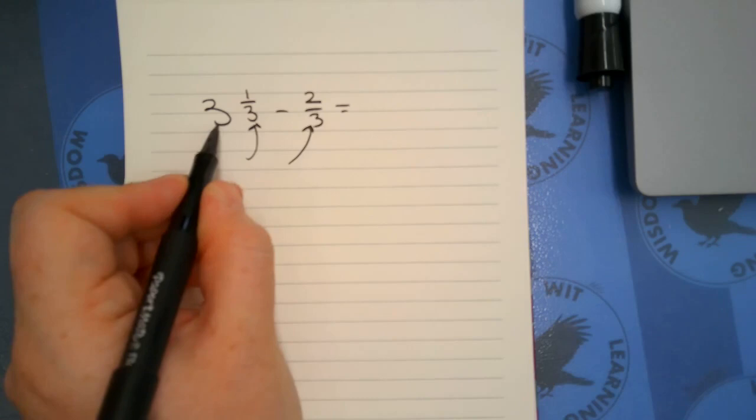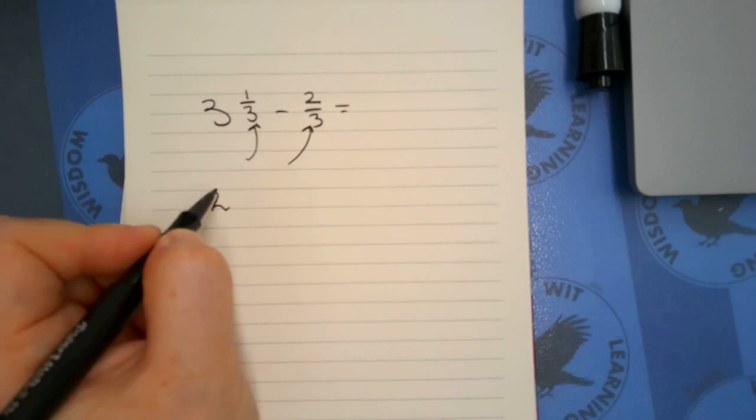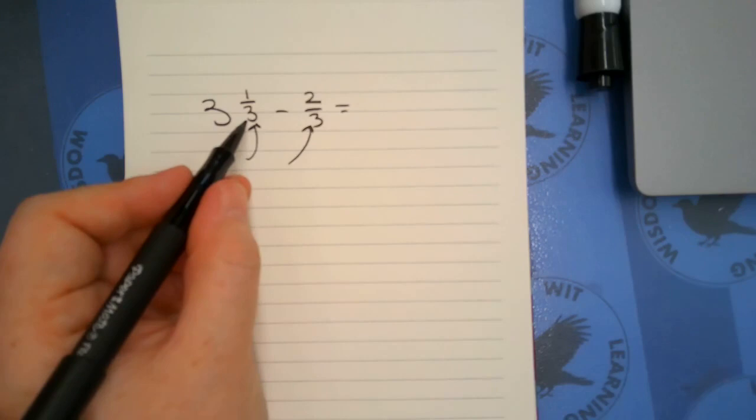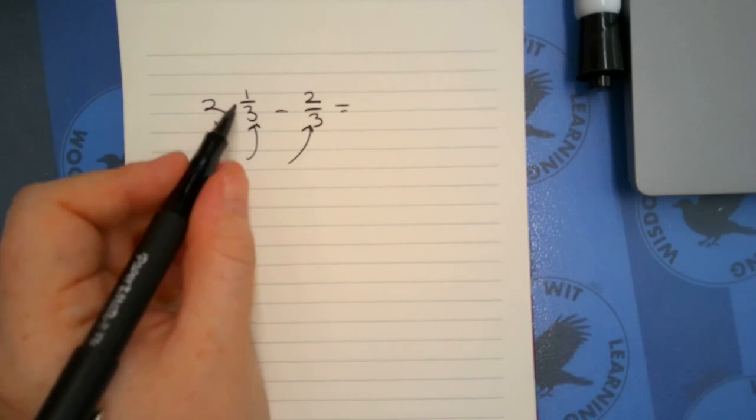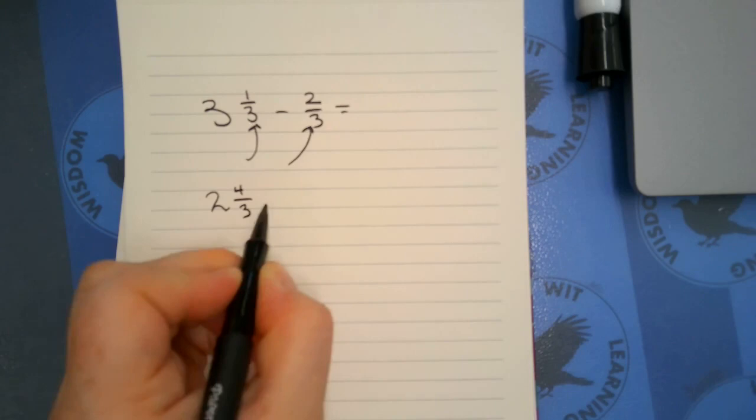So I'm going to pull out one so that this three is going to become two. I'm going to take the one that I pulled from there and I'm going to rewrite it in thirds. And I know that if I had a full amount and they're chopped into three, I would have three thirds. And since I have this extra one here, this is going to become four thirds.